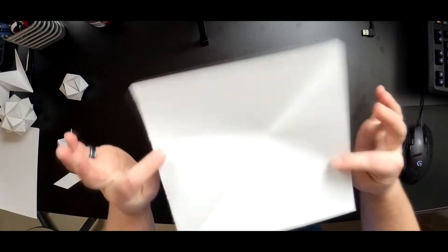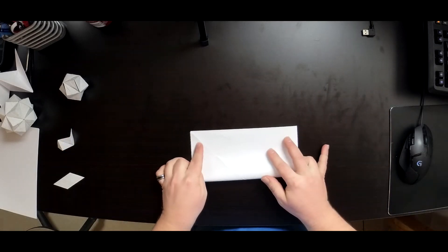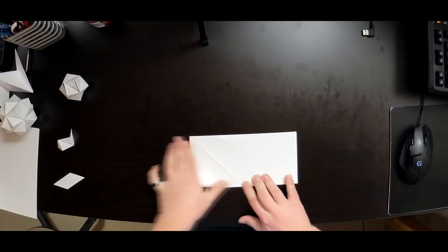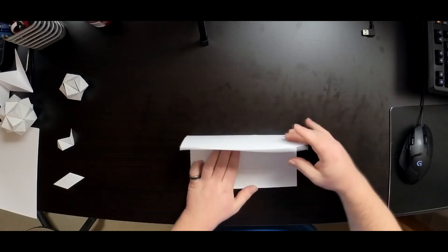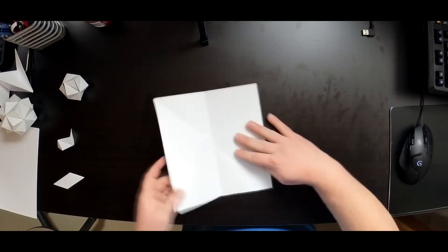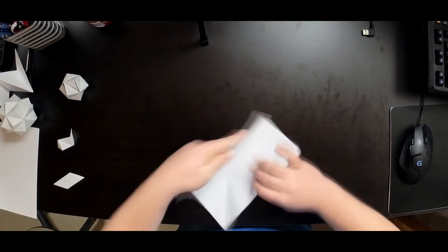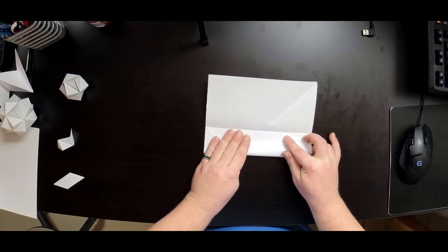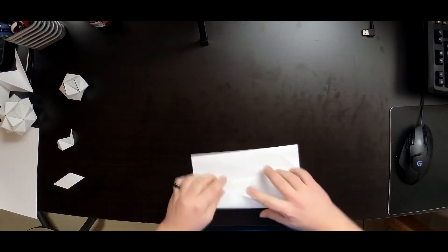So, now that we have our square, we are going to fold this square in half. Then we will fold it in half, those halves into halves. So, if you can see the crease right here, I am just going to bring this right straight to that center crease.